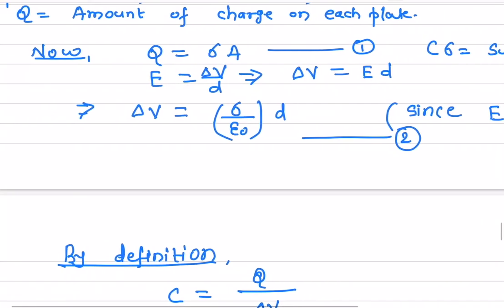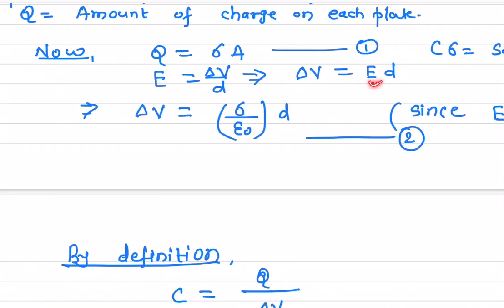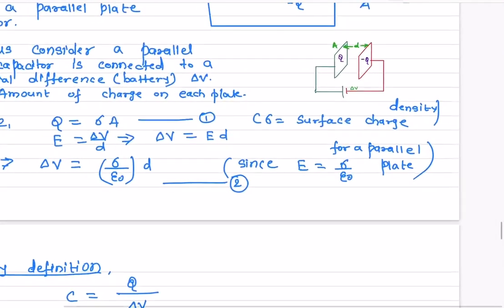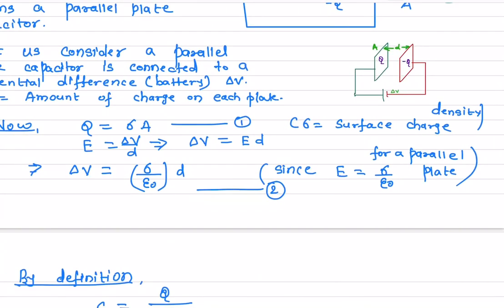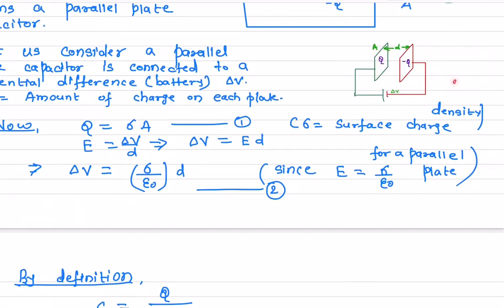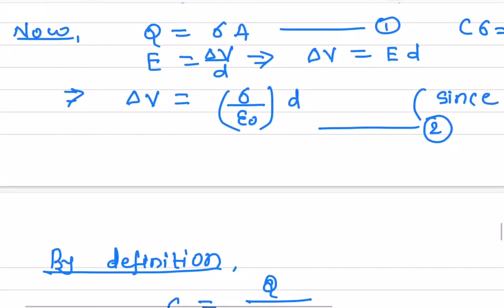The electric field between the two parallel plates is given by sigma over epsilon naught. We have already derived this using Gauss's law. So from this equation, E equals sigma over epsilon naught, and combining with the relation delta V equals E times d, we get delta V equals sigma over epsilon naught times d.